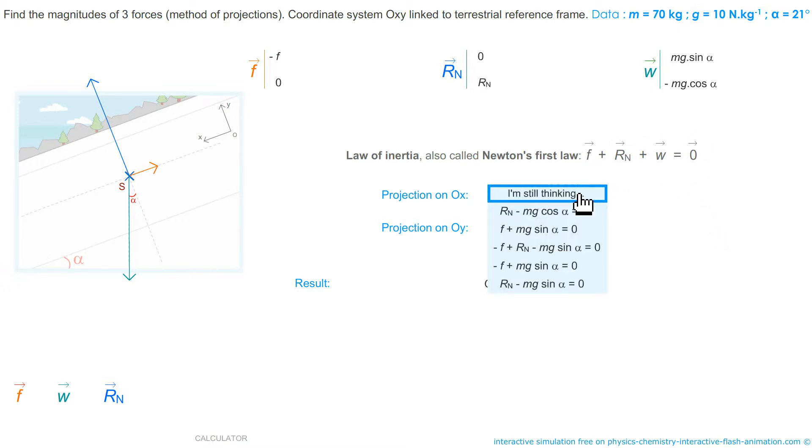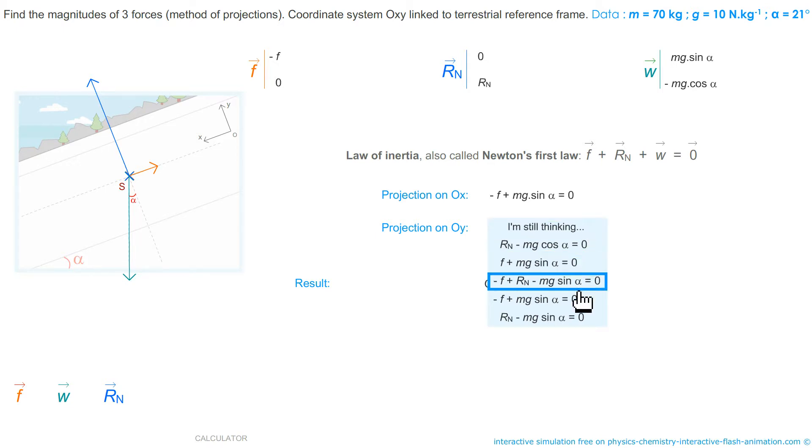Principle of inertia. The sum of the forces is zero. The algebraic sum of the projections must therefore be zero. So you got it. Minus F plus Mg times the sine of alpha equals zero. And for the other it will be R-n minus Mg times the cosine of alpha equals zero. Where is it? It's the first.